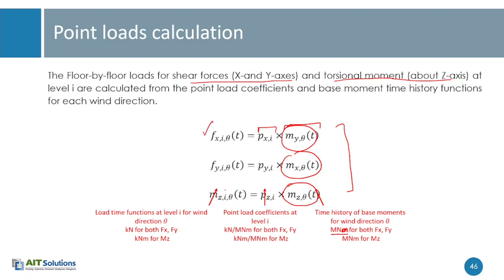F_xi is the story level force in x direction at the ith level, F_yi is the story force in y direction at the ith level, and M_zi is the torsional moment at the ith story, calculated by multiplying its coefficient with the time history of the torsional moment recorded at the base. All three values are load time functions — fluctuating time values for level i for wind direction θ. By this way, you can convert your base reaction time histories to story force time histories, which are finally applied to your FEM model.